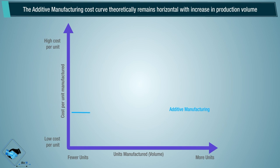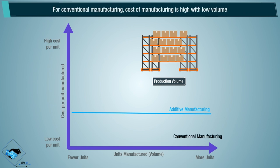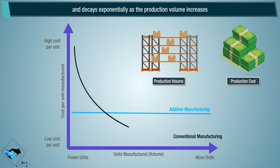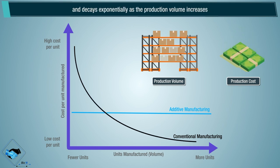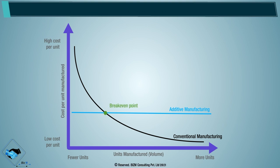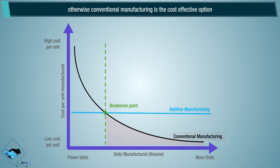The additive manufacturing cost curve theoretically remains horizontal with increase in production volume. For conventional manufacturing, the cost of manufacturing is high with low volume and decays exponentially as the production volume increases. At some point, these two lines intersect to reach the break-even point. If you are producing fewer parts than this number, then additive manufacturing is economical. Otherwise, conventional manufacturing is the cost-effective option.